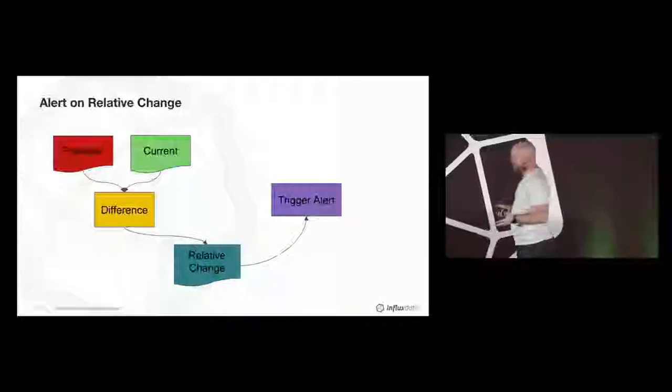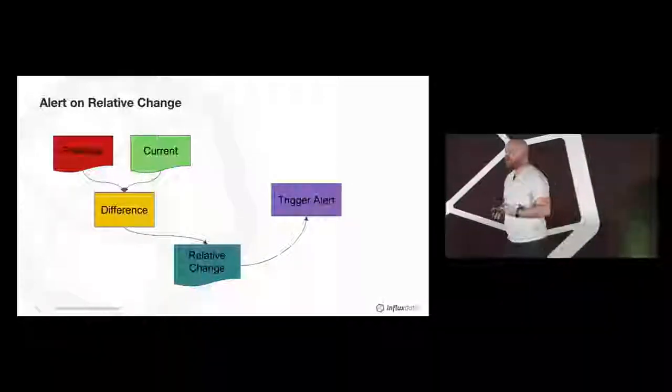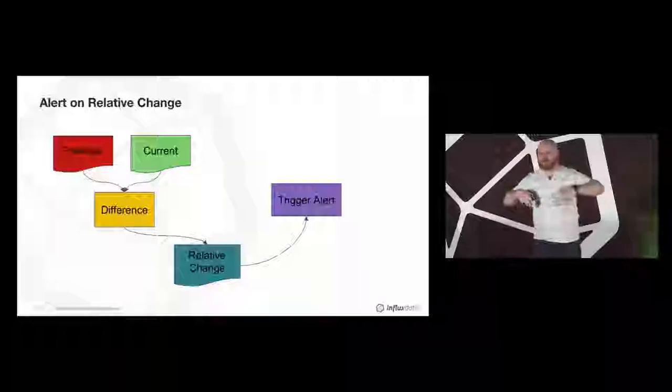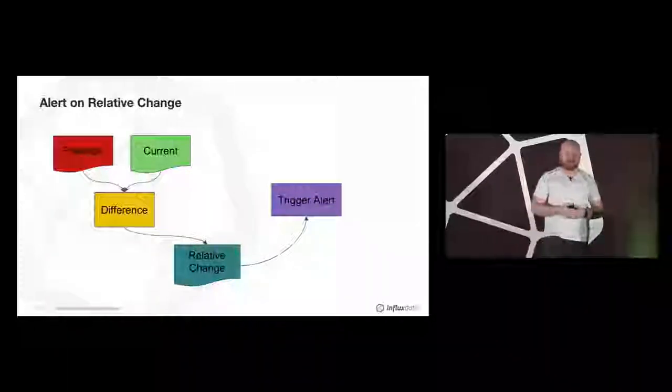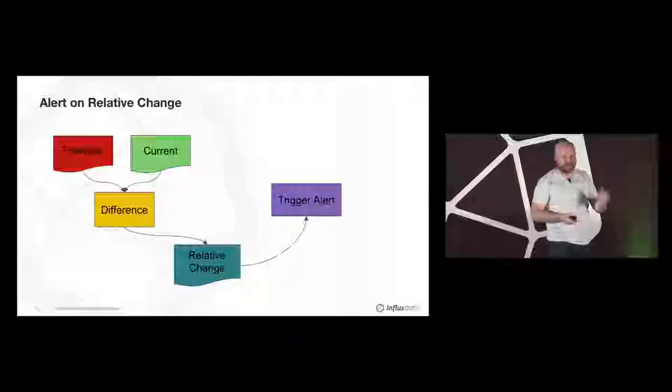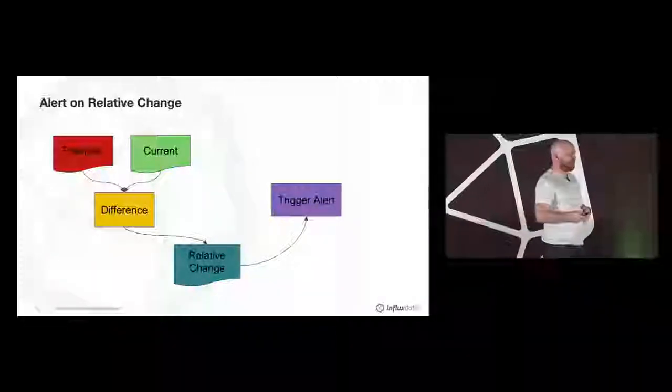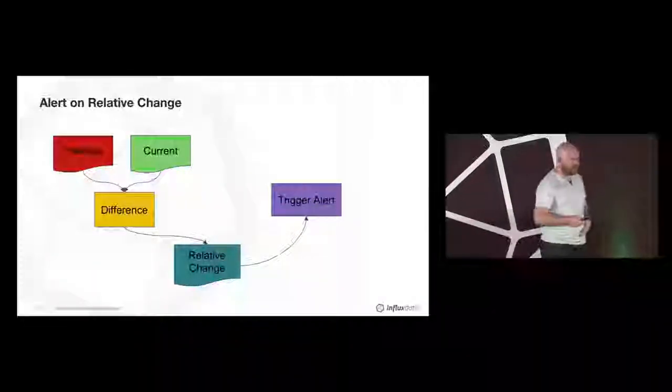Check out Chronograph. It gives you this kind of alerting in a point-and-click way. You can open Chronograph, go to the rules section, and create a percentage change alert or a relative change alert based on absolute or percentage change of values.